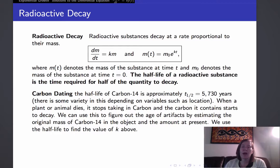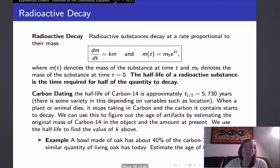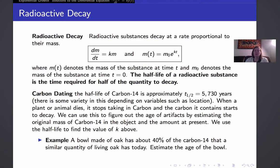Then, because we know the half-life, we can figure out the value of k and estimate the age of the artifact. And here's an example we're going to look at. Suppose a bowl made of oak has about 40% of the carbon-14 that a similar quantity of living oak would have today. Estimate the age of the bowl.